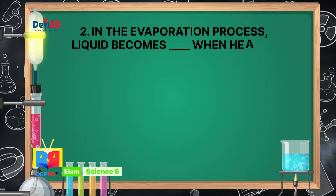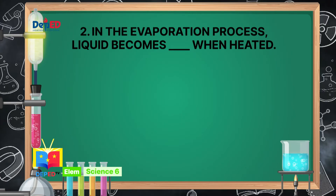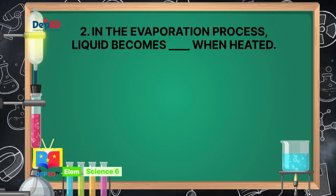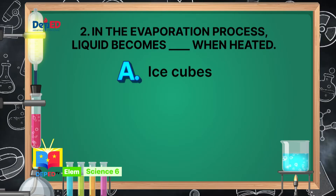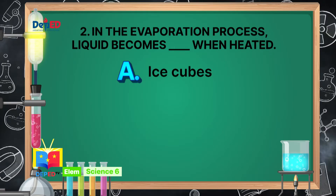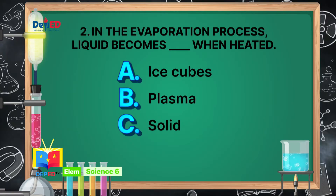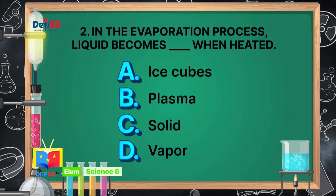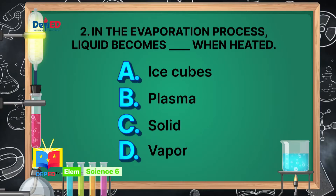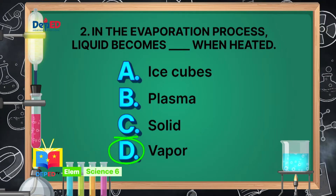In the evaporation process, liquid becomes blank when heated. A. Ice cubes. B. Plasma. C. Solid. The correct answer is letter D, vapor.